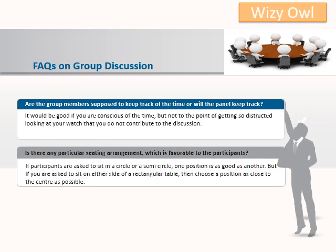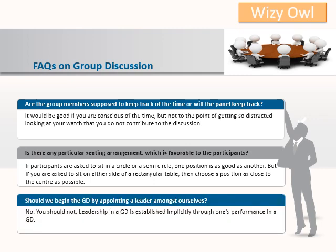Is there any particular sitting arrangement which is favorable to the participants? If asked to sit in a circle or semicircle, one position is as good as another. But if asked to sit on either side of a rectangular table, choose a position as close to the center as possible. Should we begin the GD by appointing a leader amongst ourselves? No, you should not. Leadership in a GD is established implicitly through one's performance.